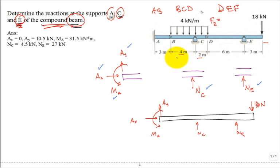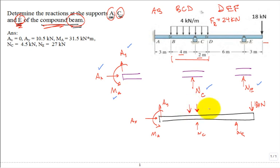The distributed load spans 6 meters at 4 kN/m, so the resultant magnitude is 6 × 4 = 24 kN. Where do we apply it? Right in the middle of that 6-meter span. Support C is located such that the midpoint is one meter over from C, so we place the 24 kN equivalent point load one meter to one side of C.